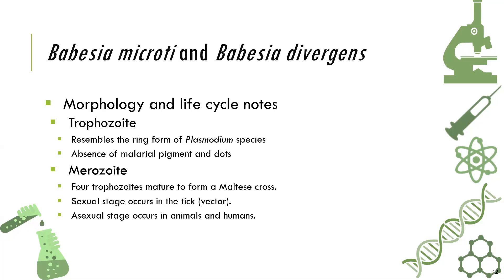The trophozoites of Babesia microti and Babesia divergens resemble the ring form of Plasmodium species. However, there is the absence of malarial pigment — the Schüffner's dot, the Maurer's dot, the Ziemann's dot, and the James dot. The merozoites are 4-trophozoites that mature to form a Maltese cross formation. The asexual phase occurs in animals and in humans.